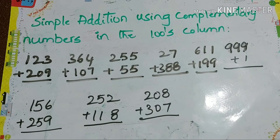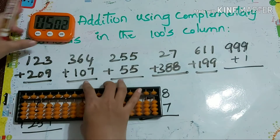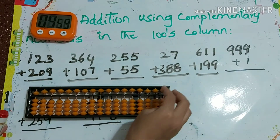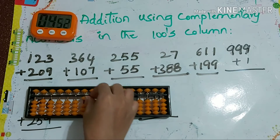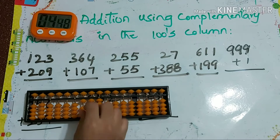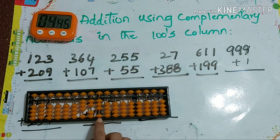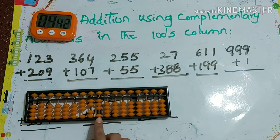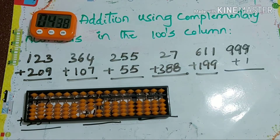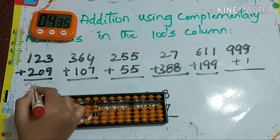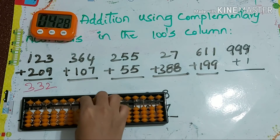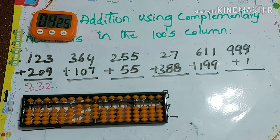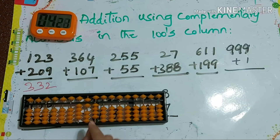Now we will see addition using complementary numbers in the hundreds column. First example: 123 plus 209. To add 9, we use plus 10 minus 1, so the answer is 332.